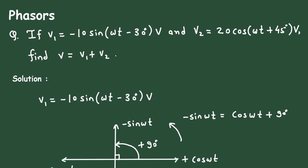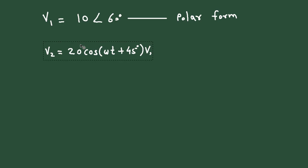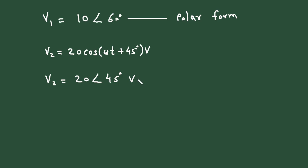Now we will do the same for V2. V2 is clearly given in standard format already, so we do not need to change anything. We can directly convert the time-domain format into its equivalent phasor domain format: V2 = 20∠45° volts. This is also the polar form.